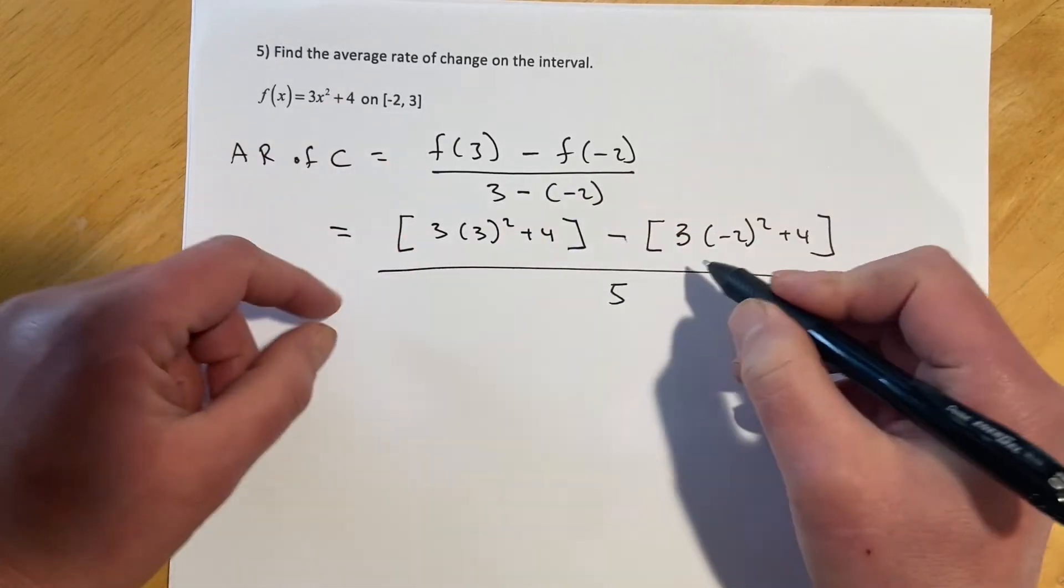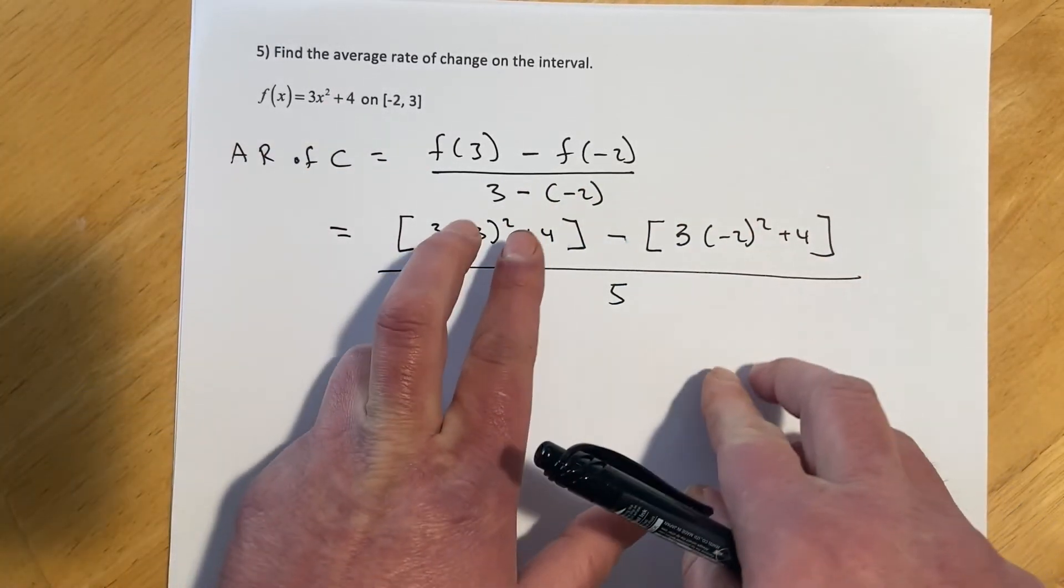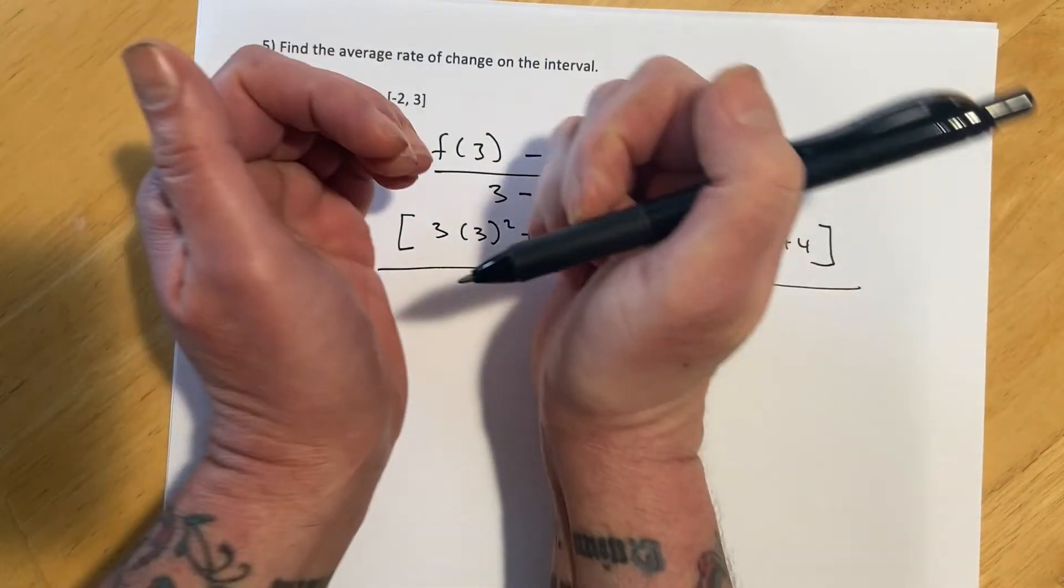but notice that I use brackets, you could also use parentheses, that's fine, but the important thing is I'm thinking of this as a number, f(3) is a number unto itself,